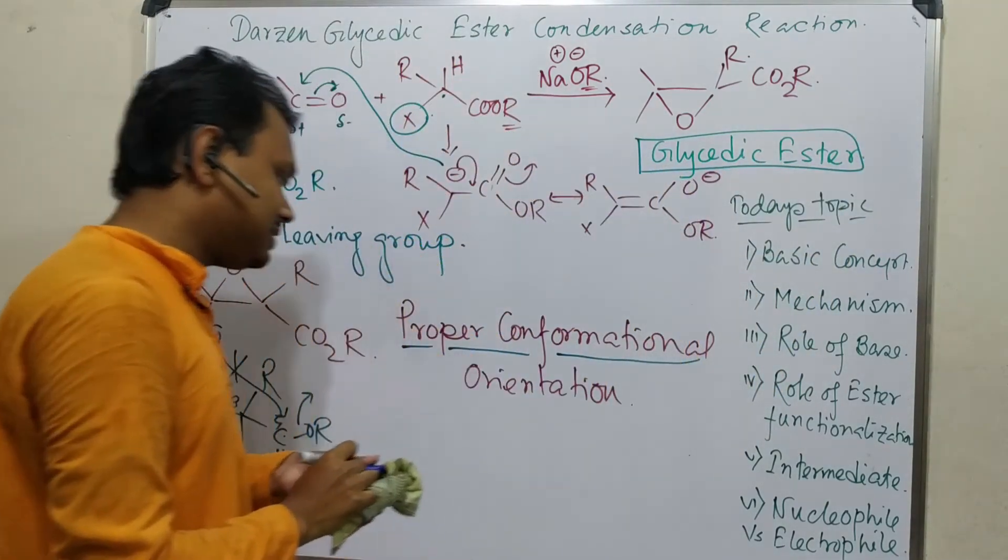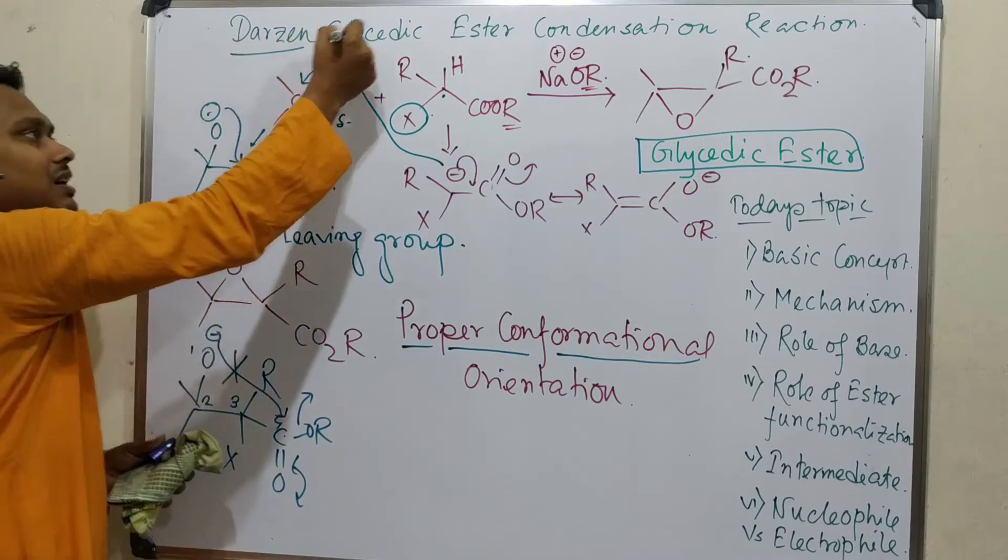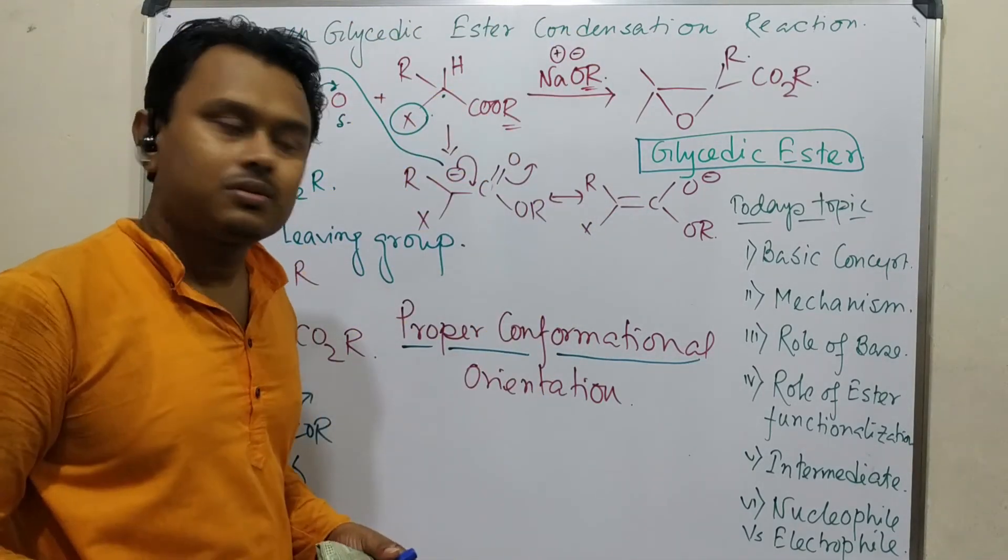So this reaction will happen and ultimately this product will be produced. And this is called glycidic ester. And that's why this name is Darzen - a scientist name - glycidic ester condensation.